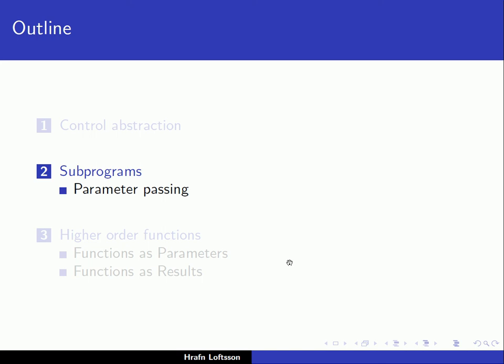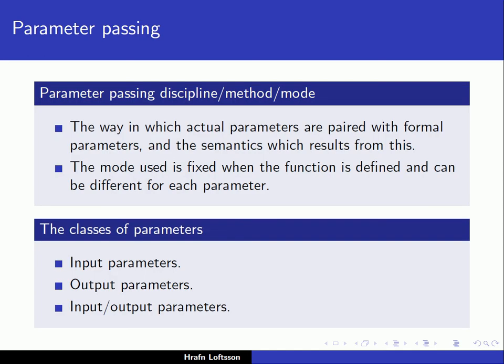Hello again. At this point we have defined what control abstraction is. We've talked about functions and how they communicate with the outside world using parameters, return values, and the non-local environment. What we're going to do now is look in more detail at the parameter passing methods. Parameter passing is often called parameter passing discipline, method, or mode. This is the way in which the actual parameters are paired with formal parameters and the semantics which result from this. The mode used is fixed when the function is defined and can be different for each parameter.